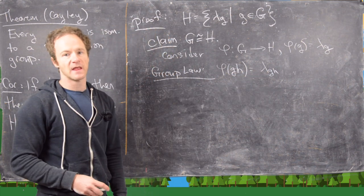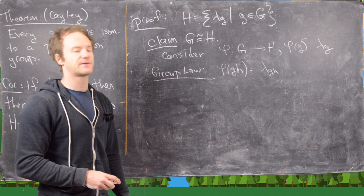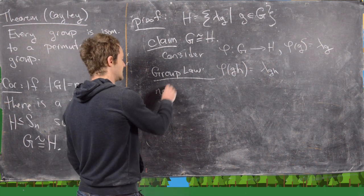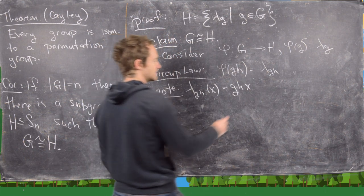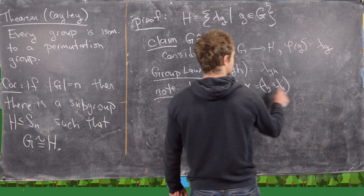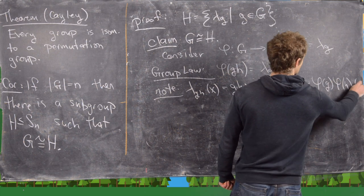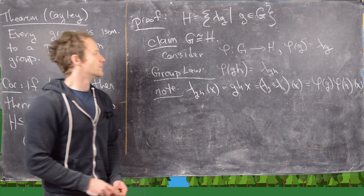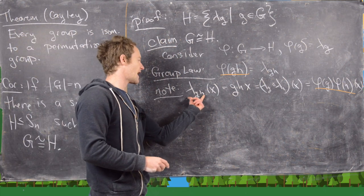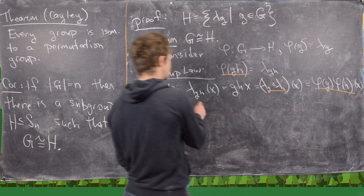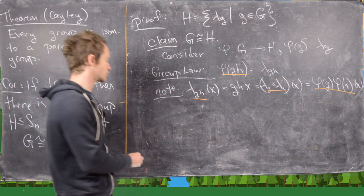The only way to verify equality of functions is to look at what they do to an element of the domain. Notice that λ_{gh} evaluated at x is g times h times x, which equals λ_g composed with λ_h evaluated at x, which is exactly φ(g) times φ(h) evaluated at x. Since x was arbitrary, φ(gh) equals φ(g)φ(h). We showed that λ_{gh} equals λ_g composed with λ_h by passing an element from the domain through it, because those are functions. So the group law is satisfied.